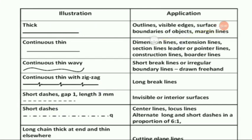Thick line is used for outlines, visible edges, surface boundary of objects, and margin lines. Second is your continuous thin line, which is used for dimensioning lines, extension lines, section lines, leader or pointer lines, construction lines, and border lines.